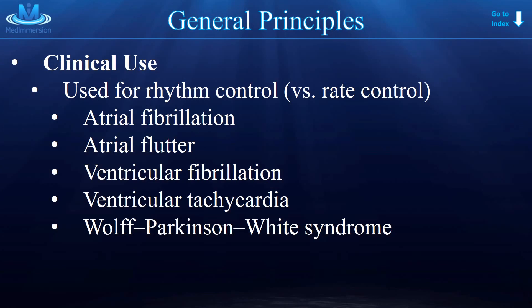We use the class III antiarrhythmic agents for rhythm control. Because they change the effective refractory period, they can help cancel out pre-excitation, accessory pathways, and other mechanisms by which you might have a tachyarrhythmia — so AFib, AFlutter, V-fib, and V-tach. Also Wolf-Parkinson-White syndrome, which is a pre-excitation syndrome that uses an accessory pathway.